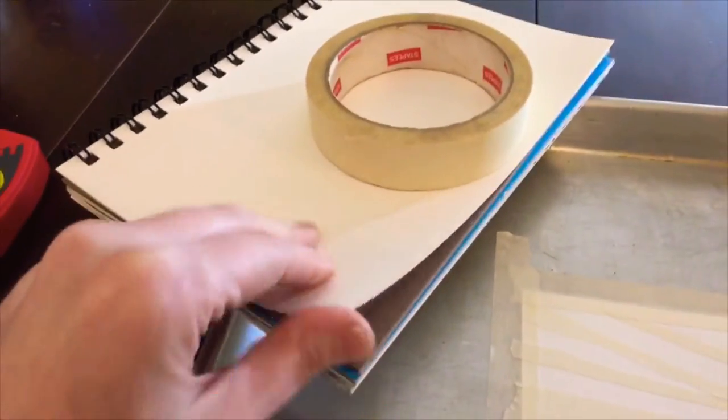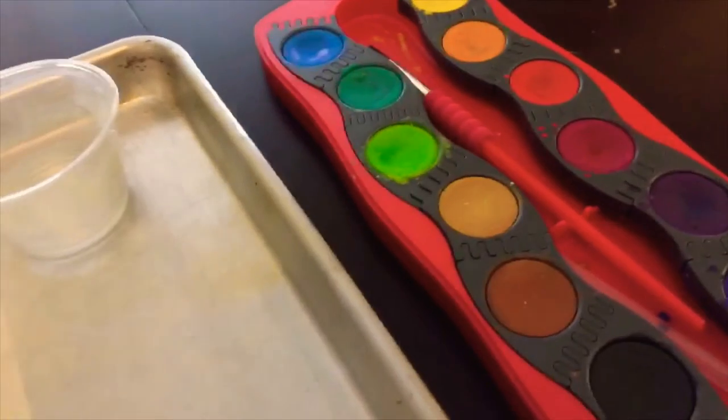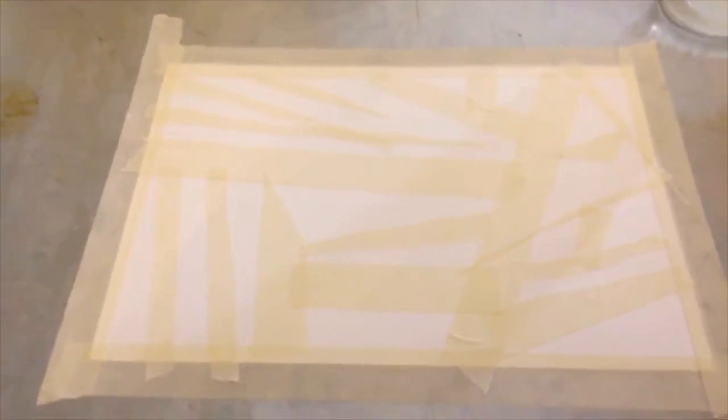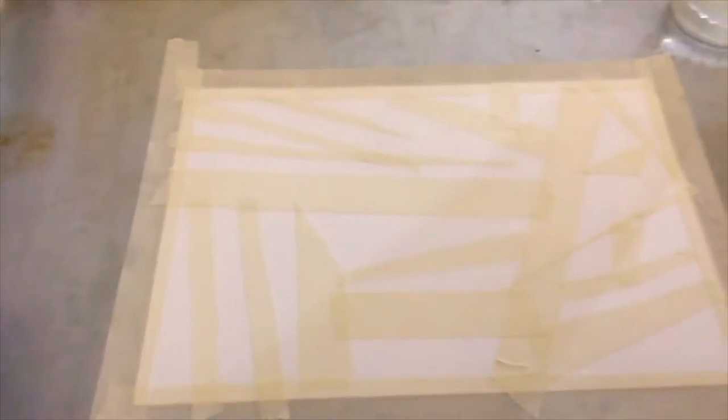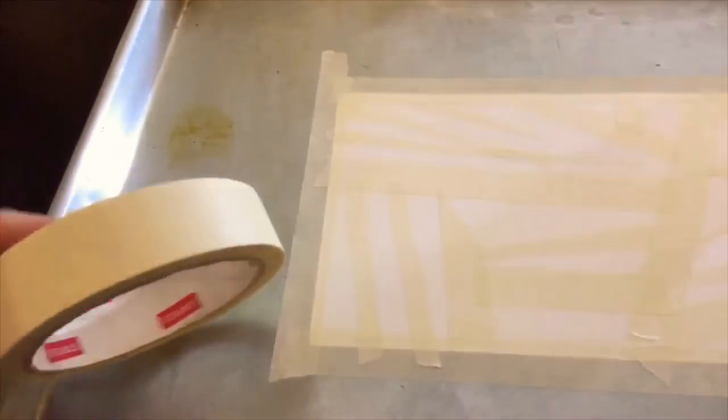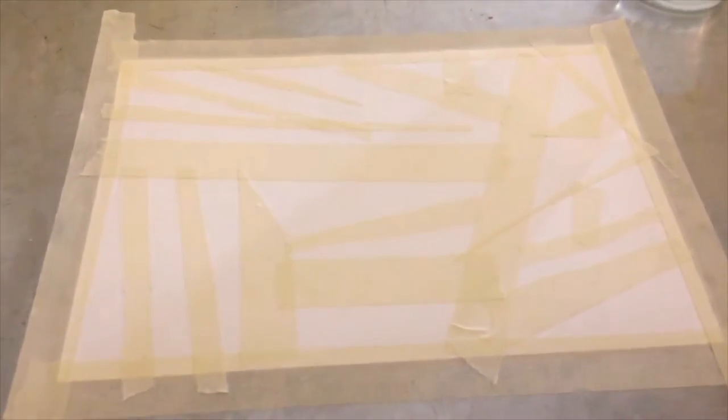Alright, so here's the paper I used and the masking tape. I've got my watercolors. And then what we're going to do, we're going to have a nice calm body and take the masking tape and you're going to take off strips of the tape and tear them and put them onto the paper.